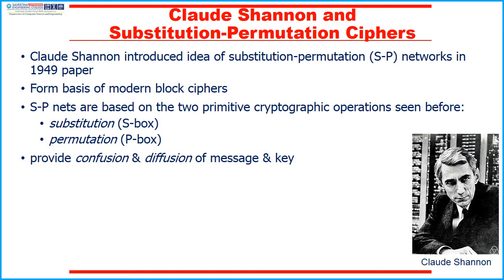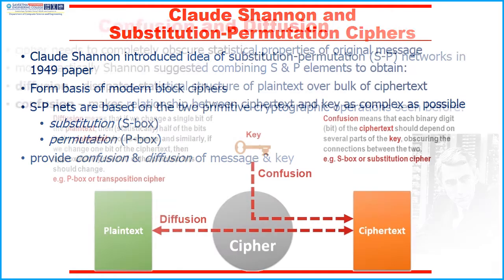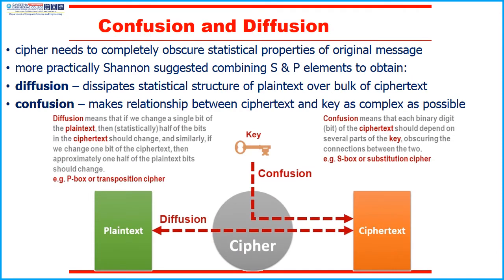Claude Shannon introduced the idea of substitution-permutation networks in a 1949 paper. Critically, it was the technique of layering groups of S-boxes separated by large P-boxes to form the SP network — a complex form of a product cipher. He also introduced the ideas of confusion and diffusion, notionally provided by S-boxes and P-boxes. Shannon suggested combining S and P elements to obtain diffusion and confusion. Diffusion dissipates the statistical structure of plain text over the bulk of ciphertext, whereas confusion makes the relationship between ciphertext and key as complex as possible.